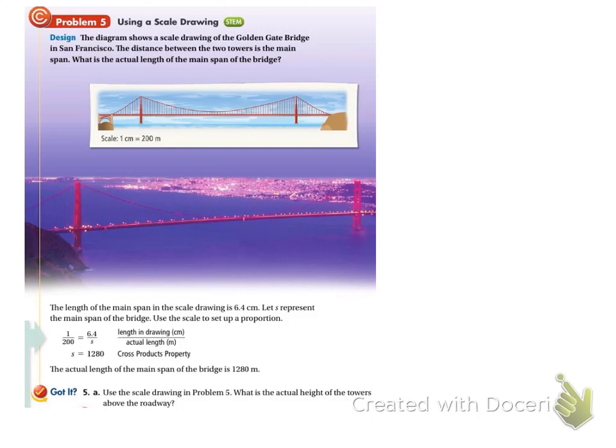So we've got our Golden Gate Bridge. And if you measure in your book, the height here is 1.1 centimeters. And we are told that the scale is 1 centimeter equals 200 meters. And we're going to convert this measurement of 1.1 centimeters into meters. So what you should do is you take the measurement you want to change and put it over 1. We did this same sort of thing when we were changing feet to inches a couple lessons back. Times, and here's our conversion.